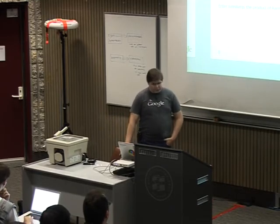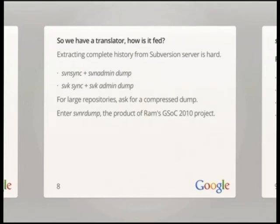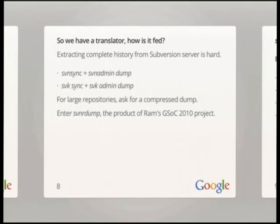Now that we've got this nice little module — reads subversion dump in, writes fast import out — we need to get data in and process the data that comes out. It turns out that it's extremely difficult to extract complete history from a subversion server; it's even hard just to extract it from a mirror of a subversion server. It's an extremely IO-intense process. SVN sync, a standard part of the SVN toolkit, unfortunately doesn't work well for projects with long history because the first step it does is read the entire history metadata for the project. When you've got a project the size of ASF — about 950,000 commits at the time I started — that's a very high probability of failure. With ASF, SVN sync will just simply fail always.